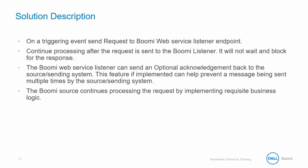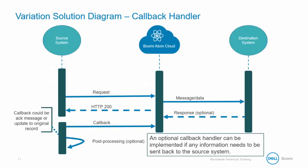The source system will not wait and block for the response. The Boomi web service listener can send an optional acknowledgement back to the source system. This feature, if implemented, can help prevent a message being sent multiple times by the source system. The Boomi source continues processing the request by implementing requisite business logic. In this variation, a callback handler message is returned to Boomi. The callback could be an acknowledgement message or an update to original records.